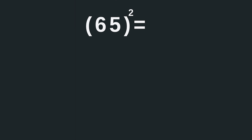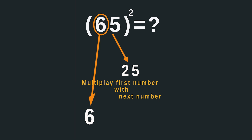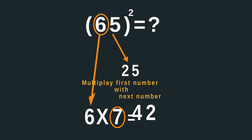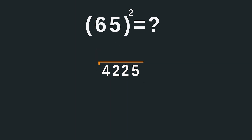Now 65 squared. Square the last digit, which gives you 25. Then multiply 6 with its next digit, that is 7. Evaluate 6 times 7, which gives you 42. Piece the results together to get the square of 65, which is 4225.